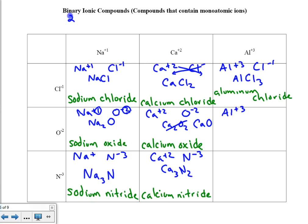The next one: aluminum and oxide. Crisscrossing, we get Al₂O₃. This is called aluminum oxide.